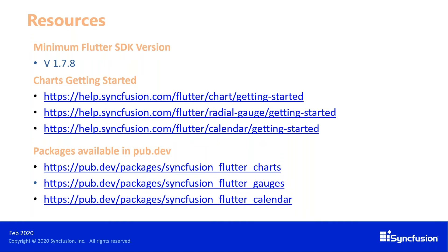You can find our documentation, APIs, and features along with getting started information at help.syncfusion.com. You can choose Flutter there to see our getting started documentation. All packages are also available at pub.dev — search for Syncfusion and you can find Syncfusion Flutter charts, gauges, and calendar there.